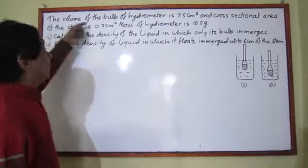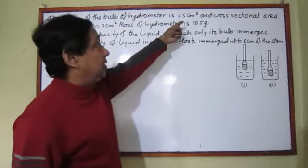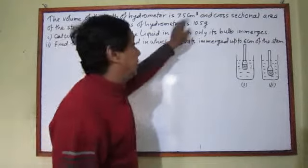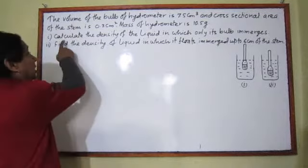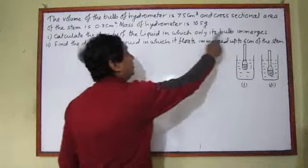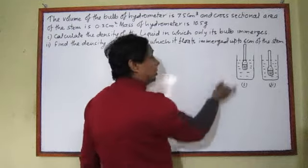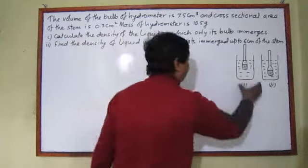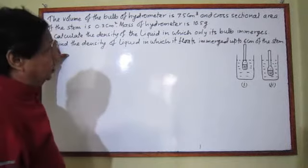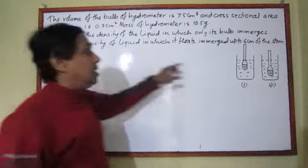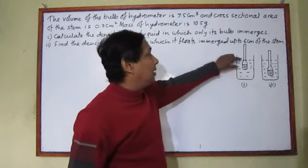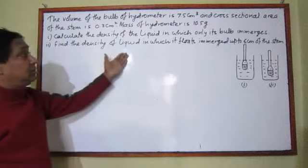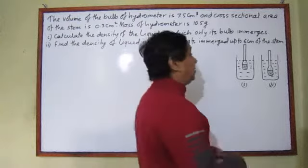Now, this is the numerical problem. The volume of the bulb of a hydrometer is given, and the cross-sectional area of the stem is also given. The mass of the hydrometer is given. The first question asks you to calculate the density of the liquid in which only its bulb is immersed. The second question asks you to find the density of the liquid in which it immerses up to 6 cm of the stem.